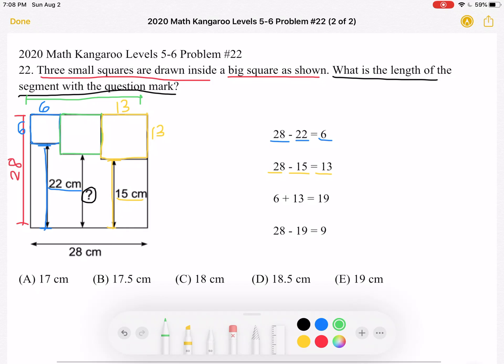And that is equal to 6 plus 13, which is 19, plus the side length of the green square. So that means that 28 minus 19, which is 6 plus 13,